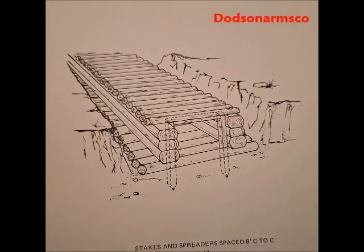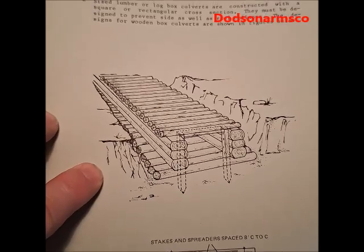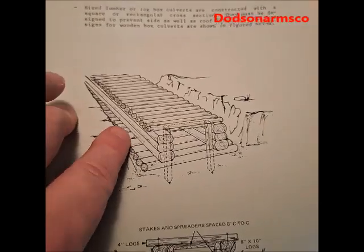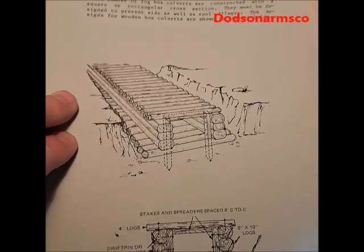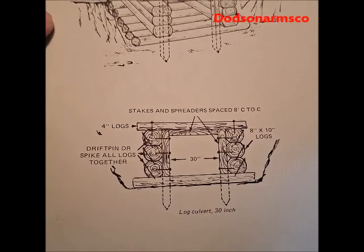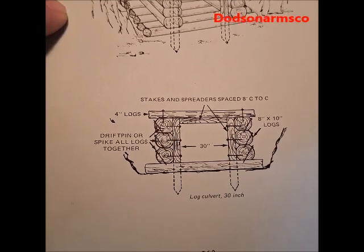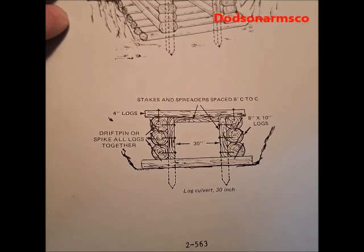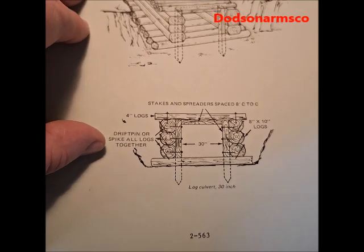This is your typical log design. What they do is go in here and flatten two sides of the logs so they're stackable. You can spike them together, and then you have internal spikes to keep the soil pressure from pushing your log stack in. This is a basic design you can use with many types of logs. It gives you dimensions here: the size of the log is 8 by 10 inches, top logs are 4 inches, and it's showing you that this is a 30 inch culvert — basically a 30 inch box. It talks about drift pins, spiking logs together.